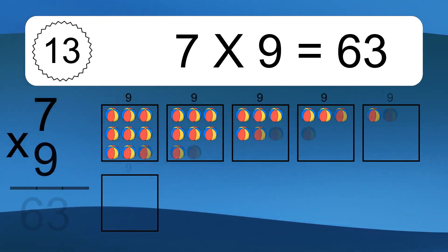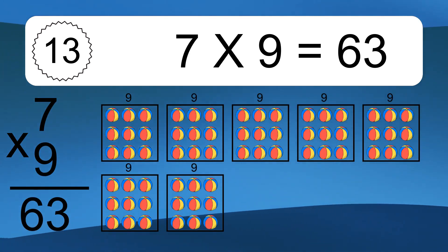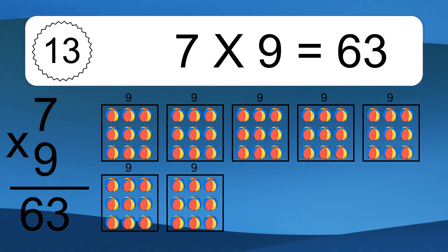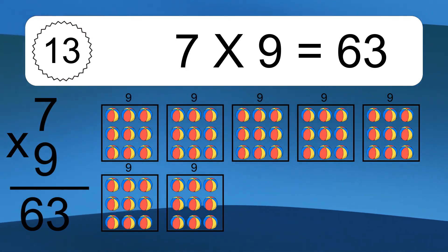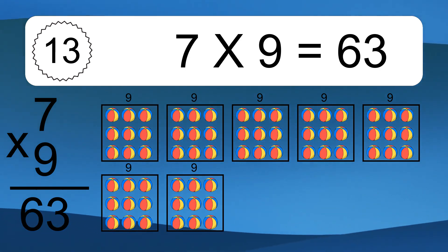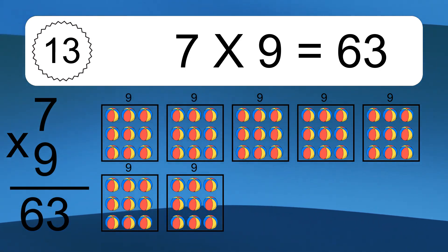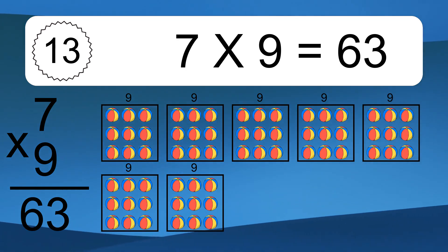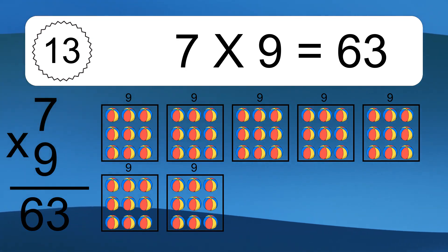7 times 9 equals what? 7 times 9 equals 63. We have 7 boxes and each box has 9 colorful balls inside. If you count all the balls in all the boxes together, you will have 7 times 9 balls. This equals 63 balls.